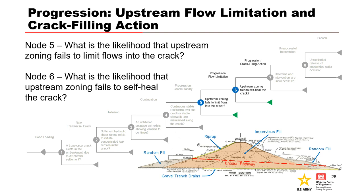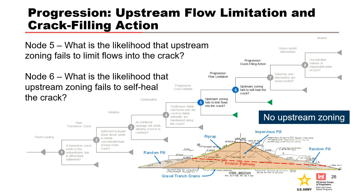For Nodes 5 and 6: What is the likelihood that upstream zoning fails to limit flows into the crack, and what is the likelihood that upstream zoning fails to self-heal the crack? Both progression nodes require an upstream zone for flow limitation and crack filling action. This is essentially a homogeneous embankment dam with no upstream zones or facing elements that could limit flows or arrest erosion by reducing hydraulic shear stresses below critical values. Similarly, there is no upstream zone that can transport particles into the developing pipes to seal them, and if there were, there are no downstream filters to trap eroded particles. There is a layer of riprap and bedding stone on the upstream slope, but it is thin and likely fell into the bottom of the crack.